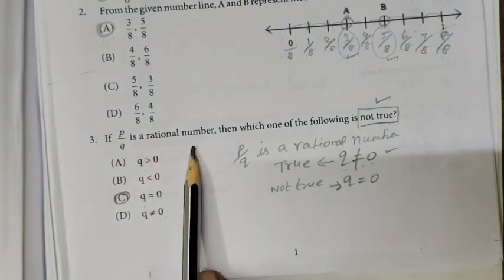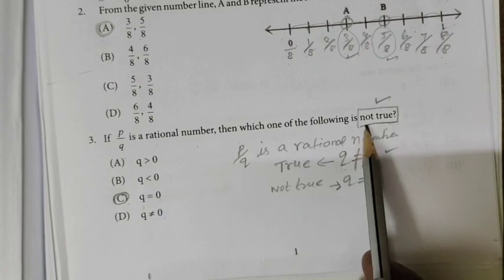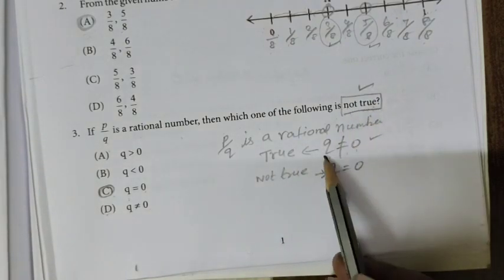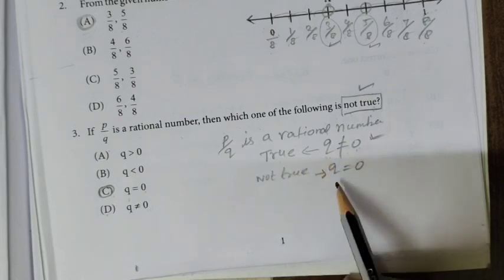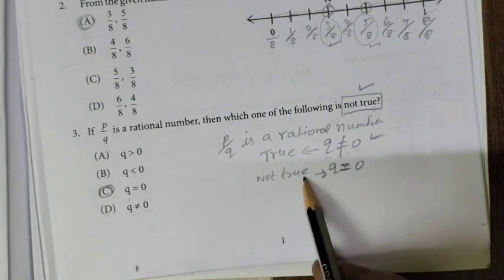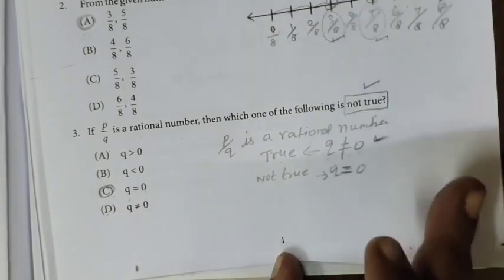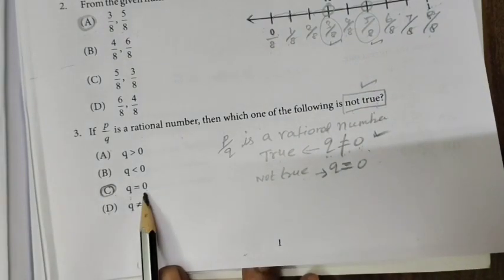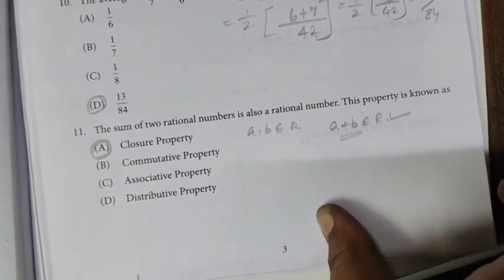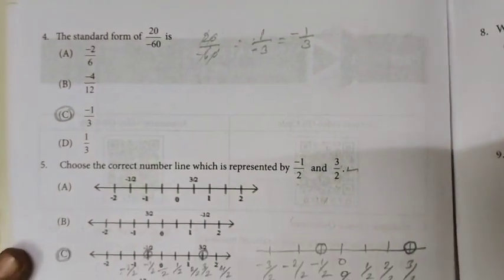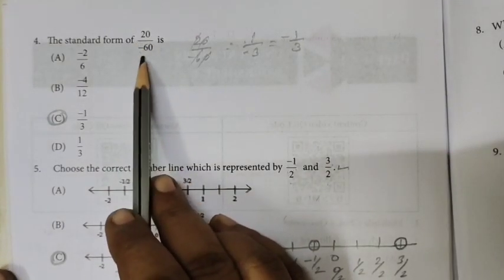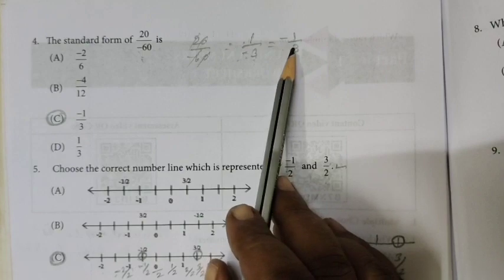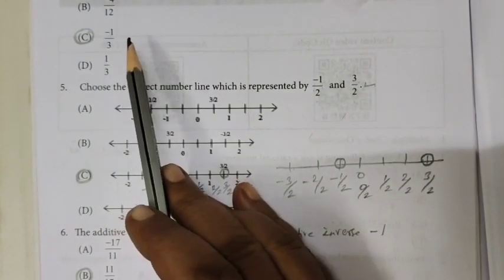Question 3: If P/Q is a rational number, which one of the following is not true? The basic definition states the denominator is not equal to 0, but option C states q equals 0, which is wrong — that condition is not true. So option C is the correct answer. Question 4: The standard form of 20 by minus 60 — cancel 20 and 60 — gives 1 by minus 3, so the answer is minus 1 by 3.